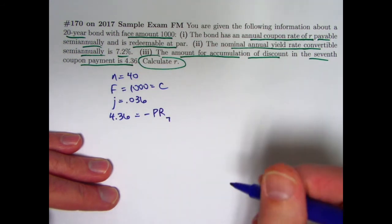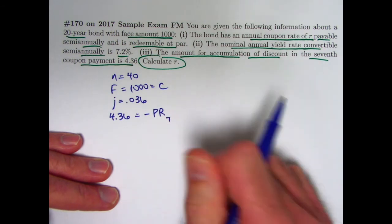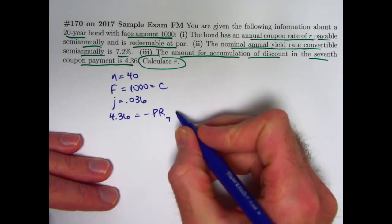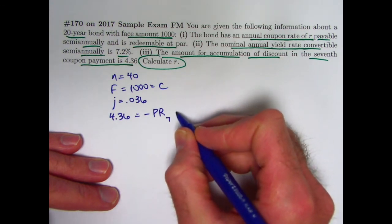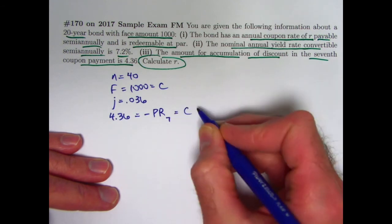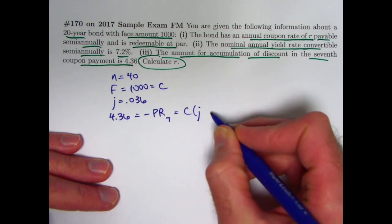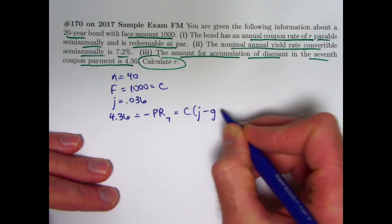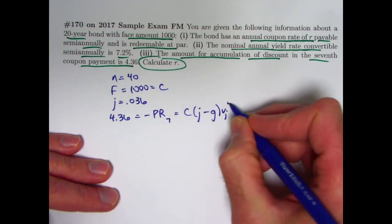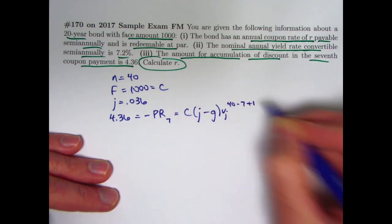This is, again, because it's a bond sold at discount. If it was sold at premium, it would be positive PR7. But even with the negative sign here, that is a positive quantity when the bond is bought at a discount. And again, the formula for this, after using that minus sign in front of it, would be the redemption value times the semiannual yield rate minus the semiannual modified coupon rate times VJ to the N minus T, which is 7 plus 1 power.